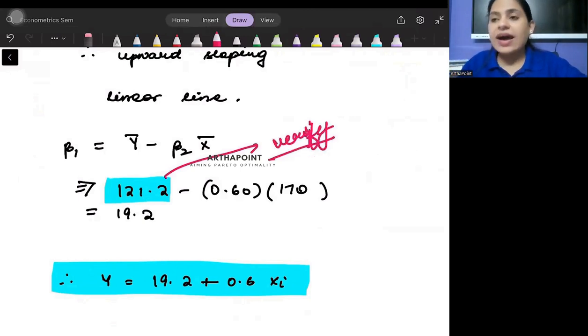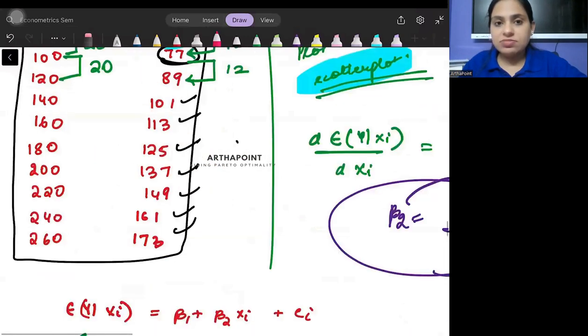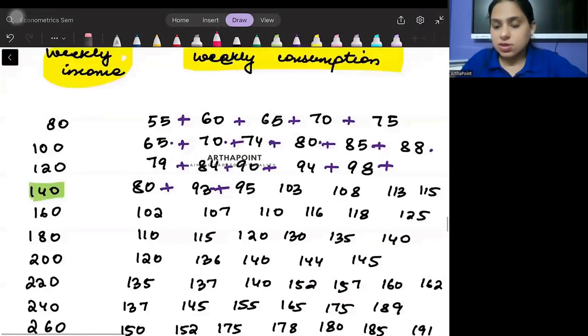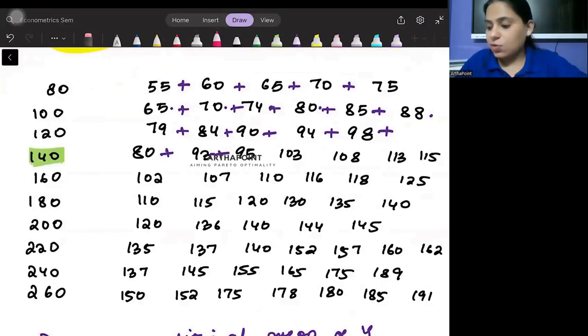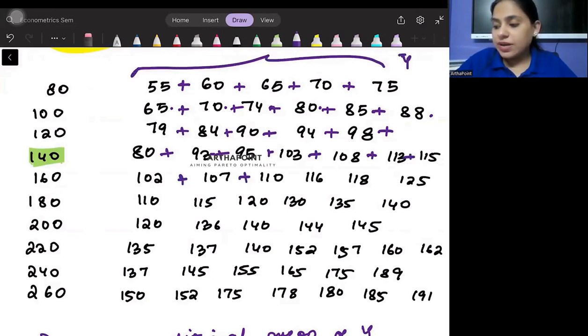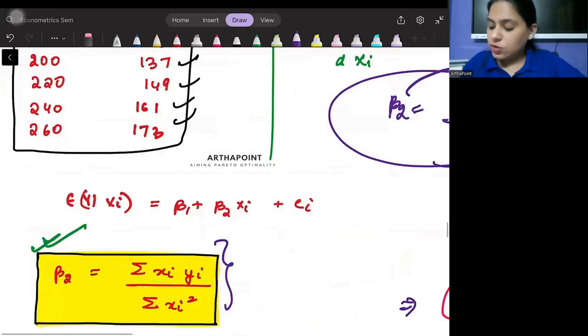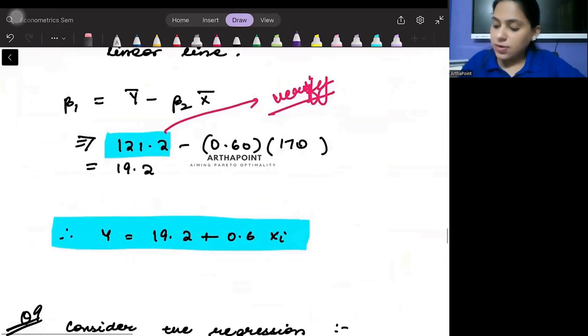Please verify. A lot of times what happens is human error. Maybe I missed out a term when adding in my calculator, so I want you to verify. You will add all these observations together divided by the number of observations. That will give you the mean of the dependent variable y. Similarly, when you add all of these terms together and divide by the number of observations, this will give you mean of x.